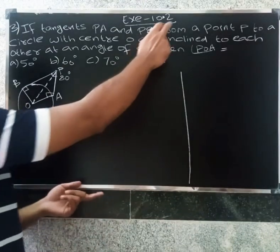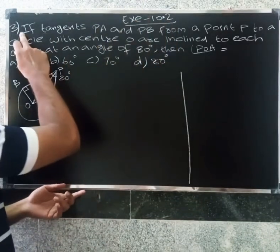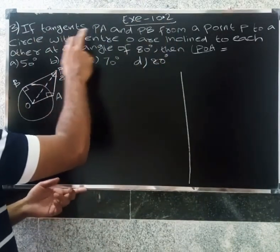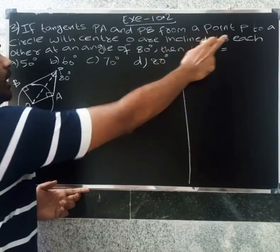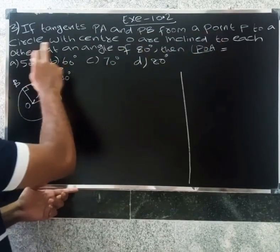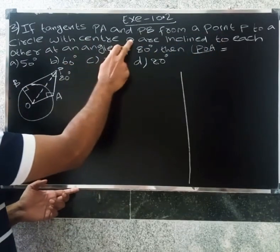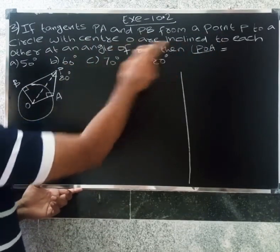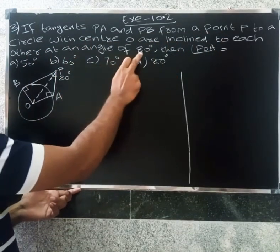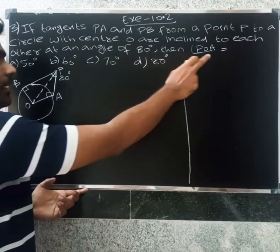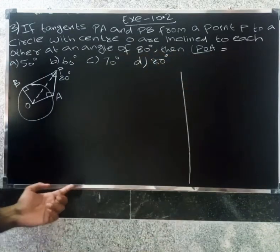Hello friends, you have to ask the third question. If tangents PA and PB from point P to a circle with center O are inclined to each other at an angle of 80 degrees, then angle POA equals what?